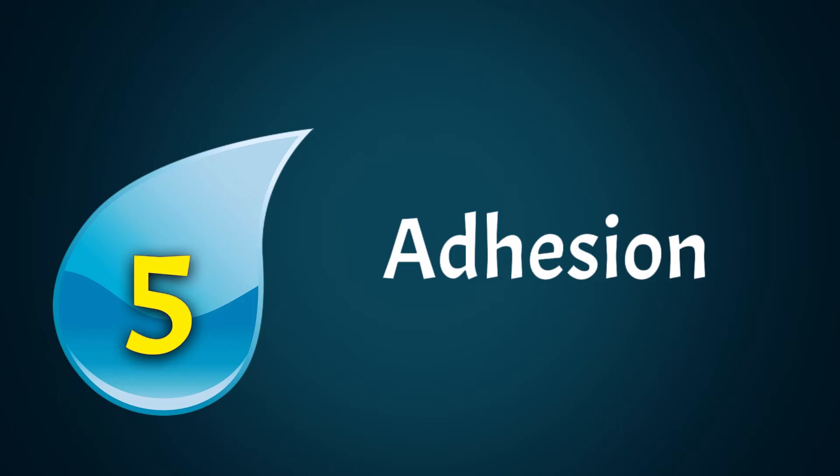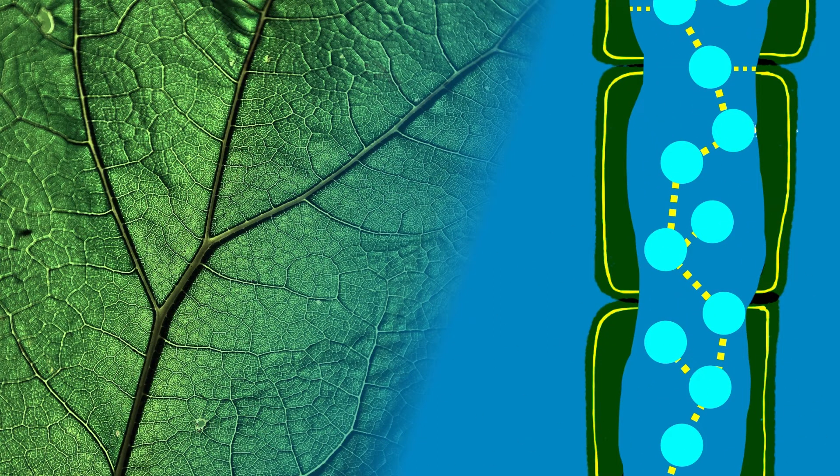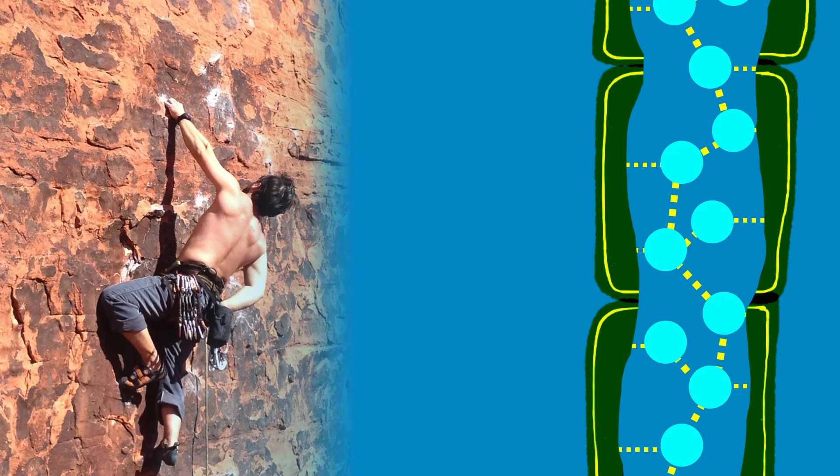In addition to being cohesive, water molecules are adhesive. This means the molecules can stick to molecules other than water. In the transpiration stream, water can stick to the walls of xylem vessels, which helps it move upward. Think about a mountain climber—they need to hold onto a cliff face if they want to move up it.